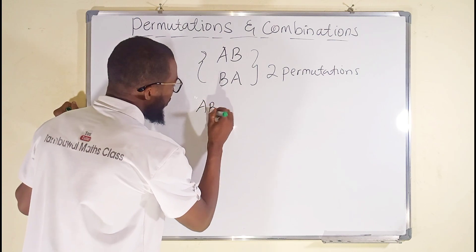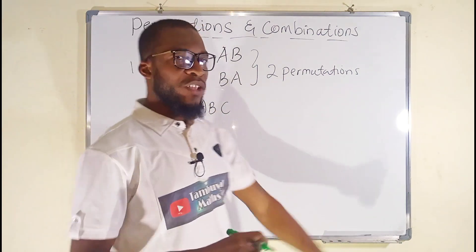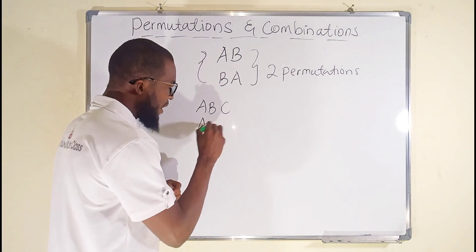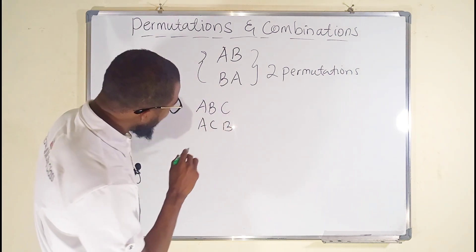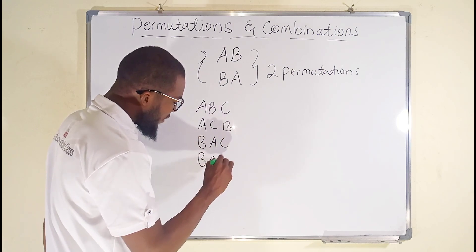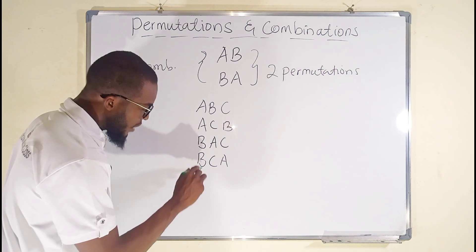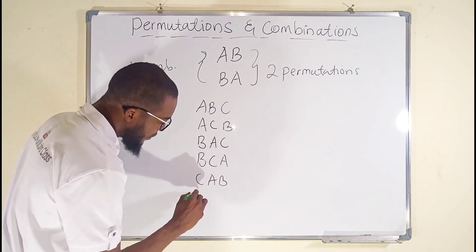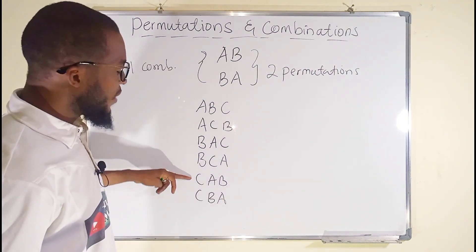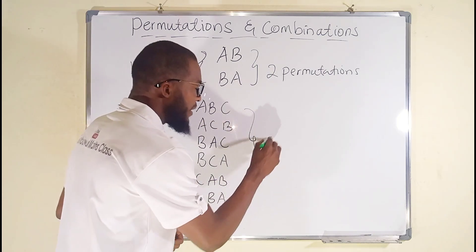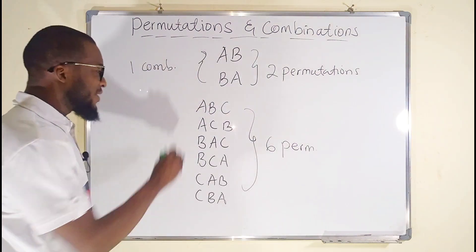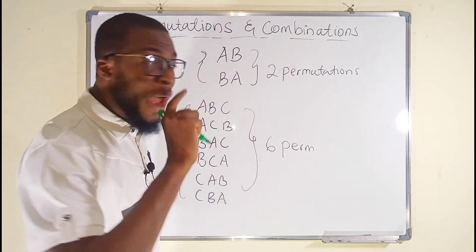Suppose we have another example: A, B, C. How many ways can we arrange A, B, C? We can arrange it as ABC, ACB, BAC, BCA, CAB, and finally CBA. How many ways? 1, 2, 3, 4, 5, 6 — we have six different permutations.